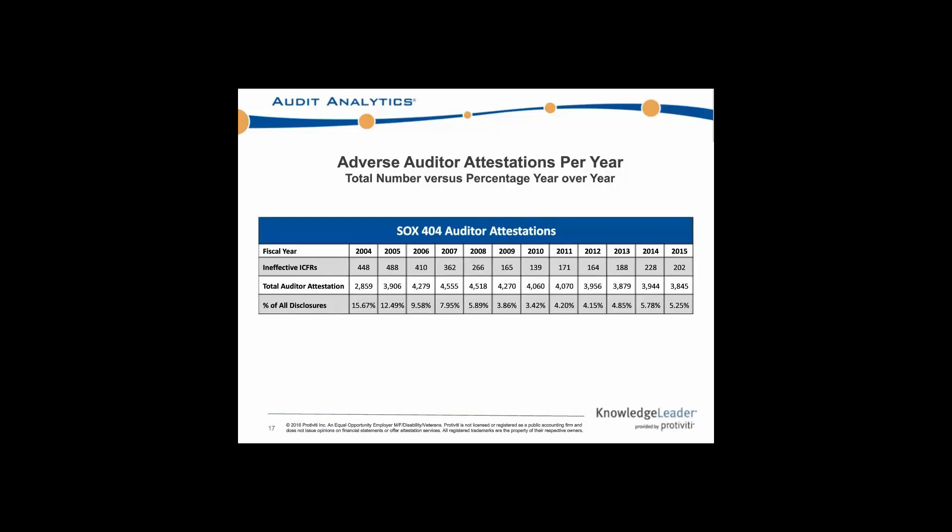The relative total number of companies mirrors what we've seen with the universal population of public companies and SEC registrants. There was really a peak in 2007, 2008, 2009 in terms of total companies in the SEC universe. Since then, because of the economy and the stock market, there's been a steady decline in the total number of companies filing with the SEC, and you can see that very closely mirrored in the total auditor attestation population.